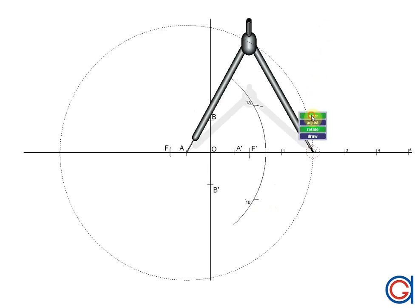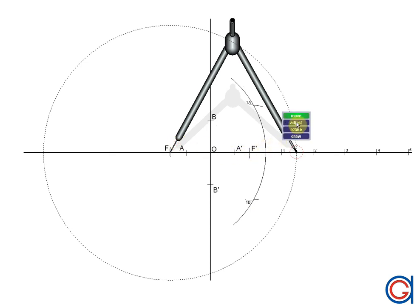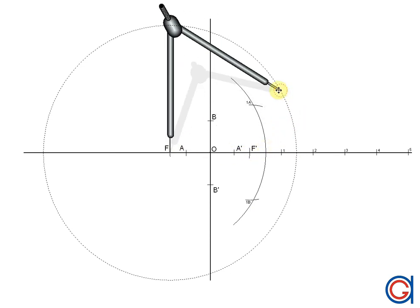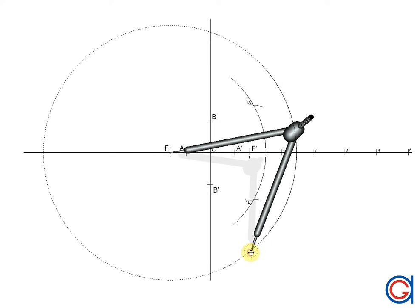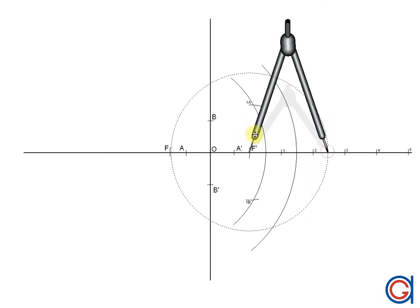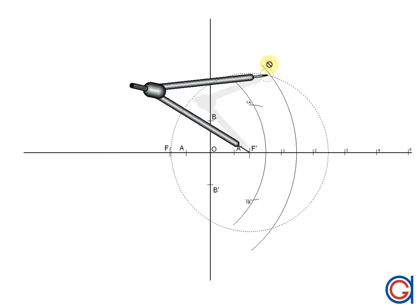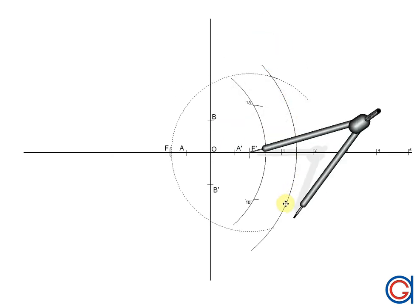Now we set the compass to the length a prime, p1 and with this new length, we set our compass on f prime and scribe two arcs, cutting the previously drawn arc at two new points, which we will call 1a and 1b, as can be seen in the video. Next, we set the compass to the length a, p2 and with this radius, we set our compass on focal point f and draw an arc to the right. Now we set the compass to the length a prime, p2 and scribe two new smaller arcs, cutting the arc at two new points, which we will call 2a and 2b.